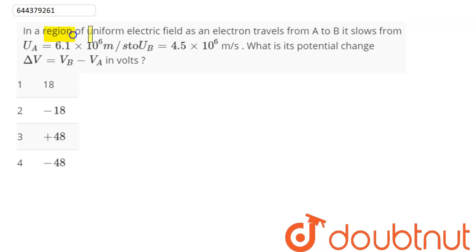Question is: In a region of uniform electric field, as an electron travels from A to B, it slows from ua = 6.1 × 10^6 m/s to ub = 4.5 × 10^6 m/s. What is its potential change, ΔV = Vb - Va?